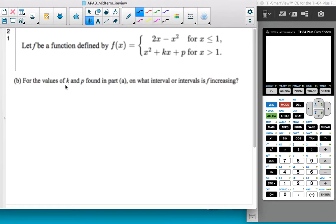So we're asked to use the K and P that we found in part A, so I'm just going to go ahead and copy those from our part A. In part A, we found that K was negative 2 and P was 2, meaning that this expression, instead of being this now, is x squared minus 2x plus 2.